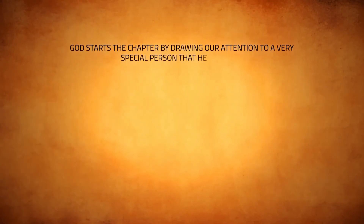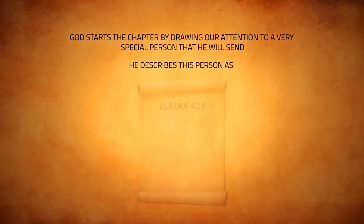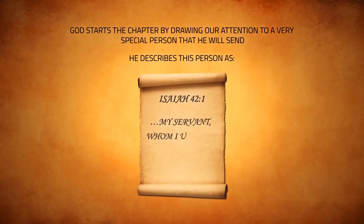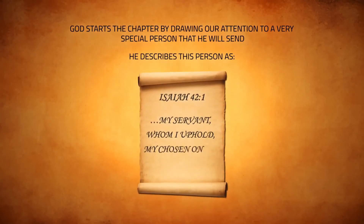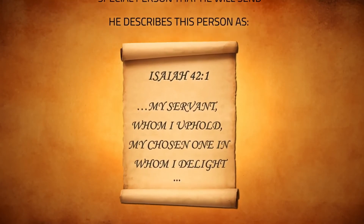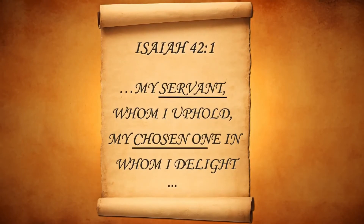God starts the chapter by drawing our attention to a very special person that he will send. He describes this person as: 'My servant, whom I uphold, my chosen one, in whom I delight.' At least three of the names of the Prophet Muhammad are mentioned: servant, chosen one, and in whom I delight.